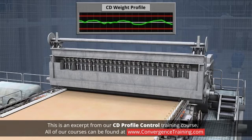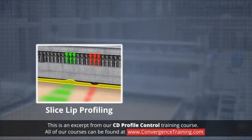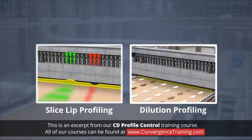The sheet's CD weight profile is established at the head box, where there are two major methods of profiling: slice-lip profiling and dilution profiling.